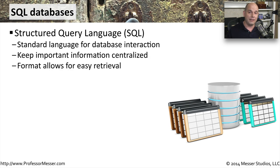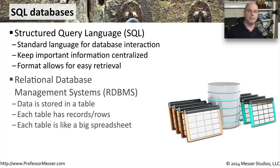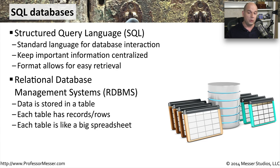When you're storing a lot of information, you're really trying to find the best way to gather the information that you need. This information is stored in a structure called a Relational Database Management System, or RDBMS. These databases are big, flat fields of information — they look very much like a spreadsheet. There's a lot of information stored in a table, with rows and columns.